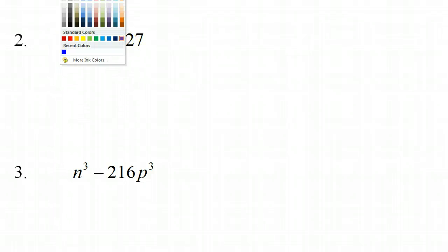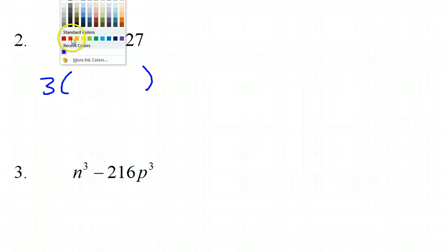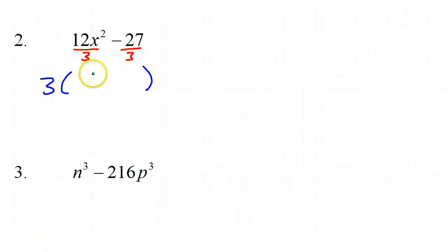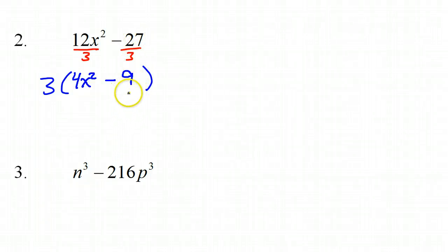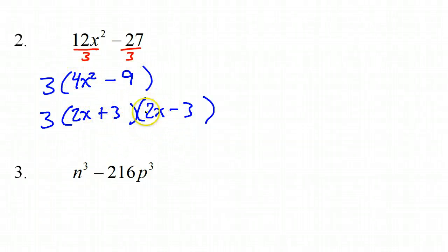Number two. The first step of factoring is to look for a common factor. Both of these are divisible by 3 — that is the GCF. So I will pull out the 3 outside of parentheses. Whenever I pull out a common factor, I'm really dividing to see what goes inside. 12 divided by 3 is 4, so this would be 4x squared minus 9. Then I notice that this is the difference of two squares, so it can be factored further. I'll keep that 3, and the difference of two squares factors as (2x + 3)(2x − 3). This is the final answer for number 2.